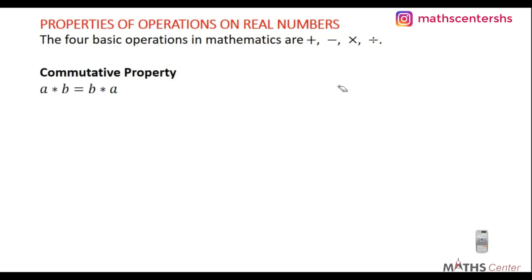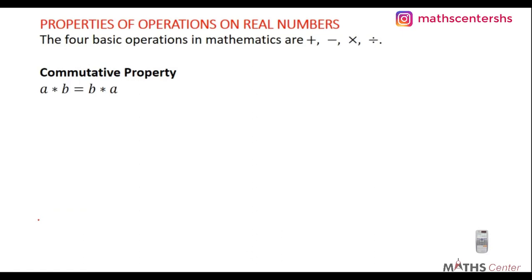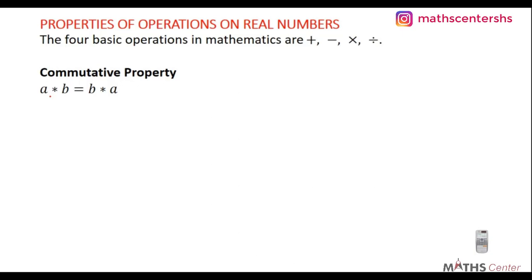The first property is the commutative property. It states that for two numbers a and b with operation star, a star b must be the same as b star a. This operation star can represent addition, subtraction, multiplication, or division.